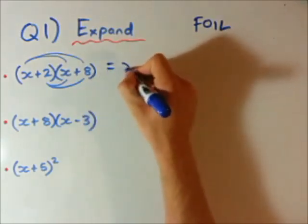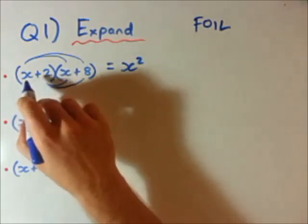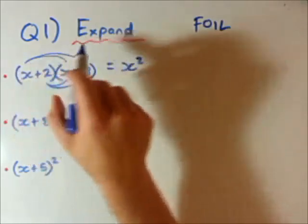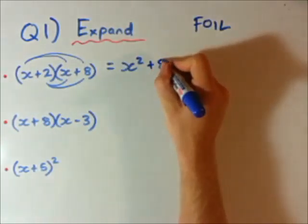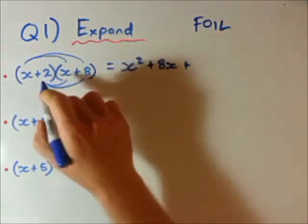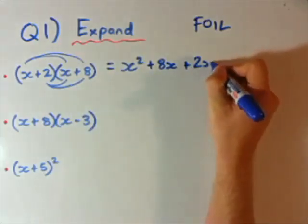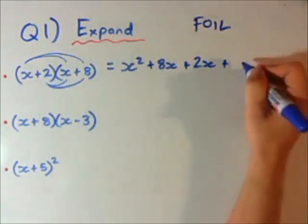So, let's go ahead and do that. So, I've done that one first, then I'm going to go x by 8, then I'm going to go 2 by x, and then 2 times 8 is 16.